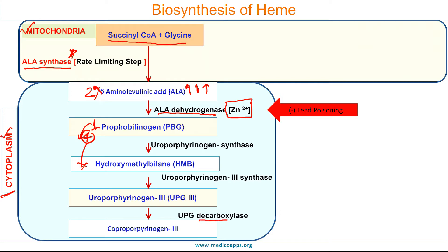The next step is a decarboxylation reaction in which UPG3 is converted into coproporphyrinogen 3, or CPG3, catalyzed by UPG decarboxylase. In this reaction, four molecules of carbon dioxide are eliminated by the UPG decarboxylase enzyme.